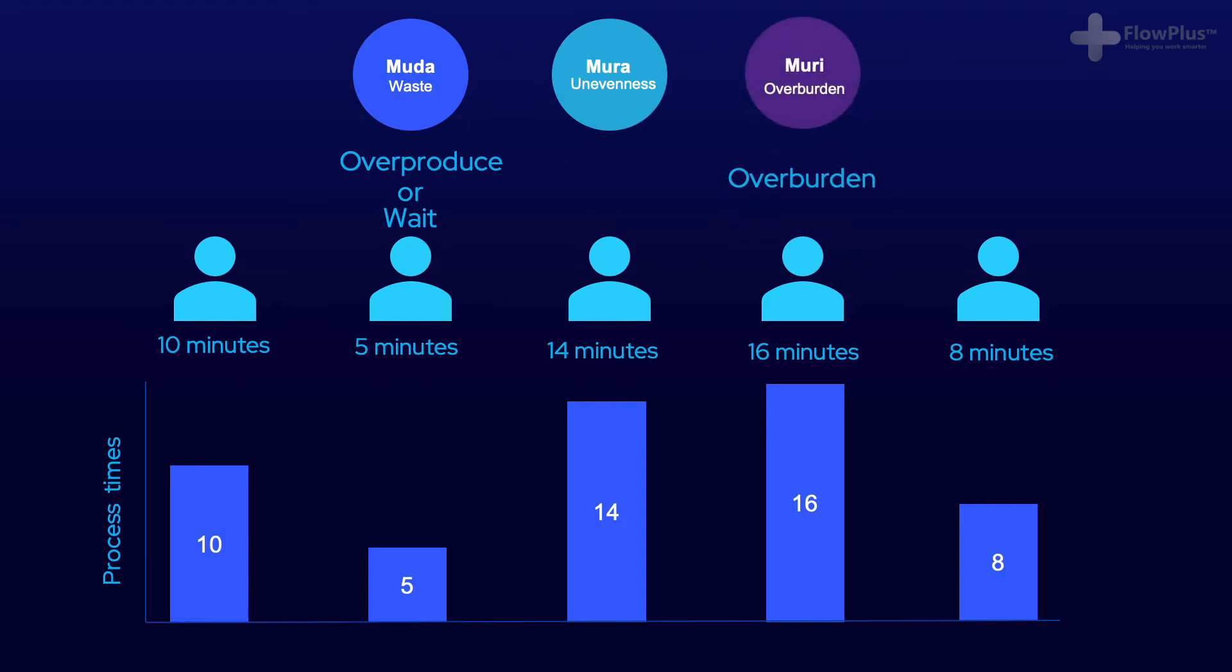Operator 4 is working the hardest and likely overburdened, leading to stress, injuries, high levels of absenteeism, and is likely annoyed at the fact that they're working harder than everyone else.